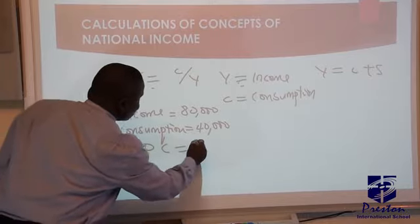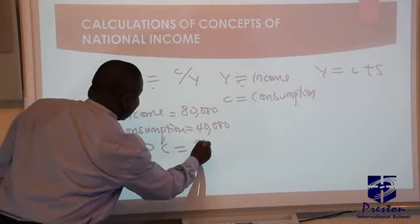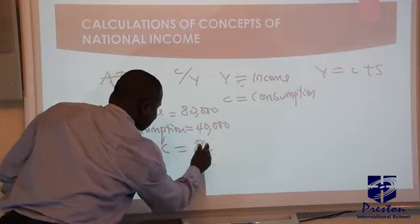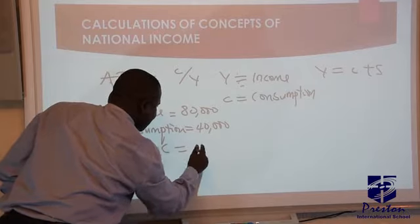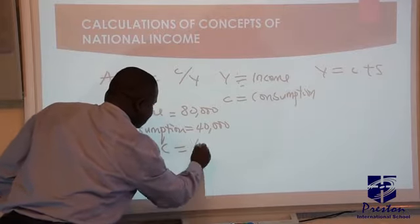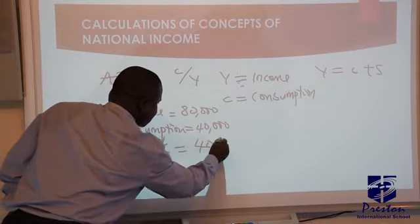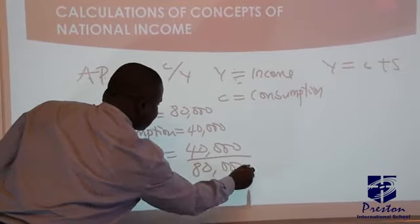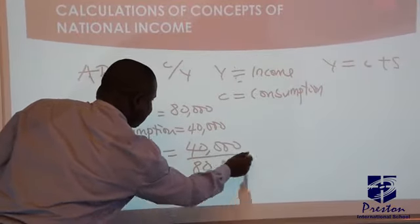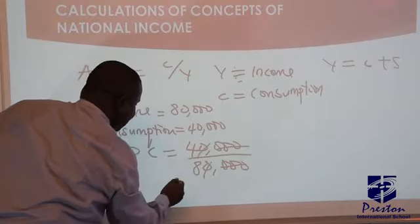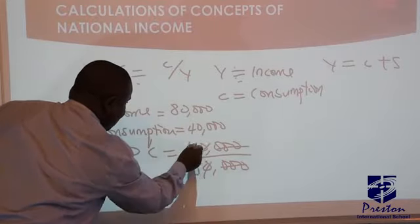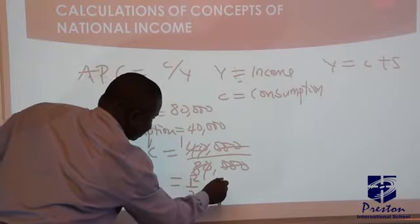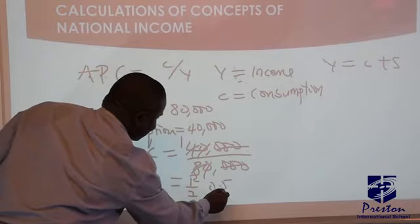So APC will be equal to 40,000 divided by 80,000. Cancel the zeros: you have 1 over 2, which is also 0.5. That is your APC.